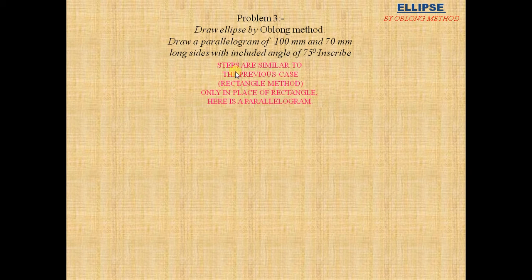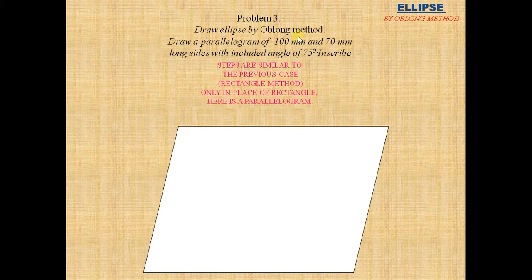The steps are similar to the previous case, rectangle method, only in place of rectangle here is a parallelogram. Draw a parallelogram with required measurements of 100mm and 75mm with an inclined angle. This angle was 75 degrees.